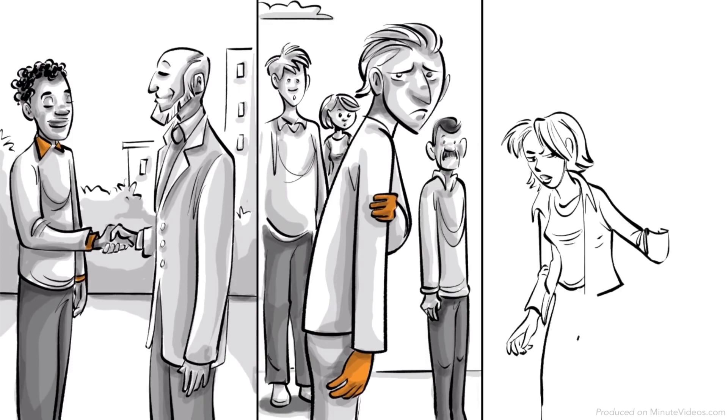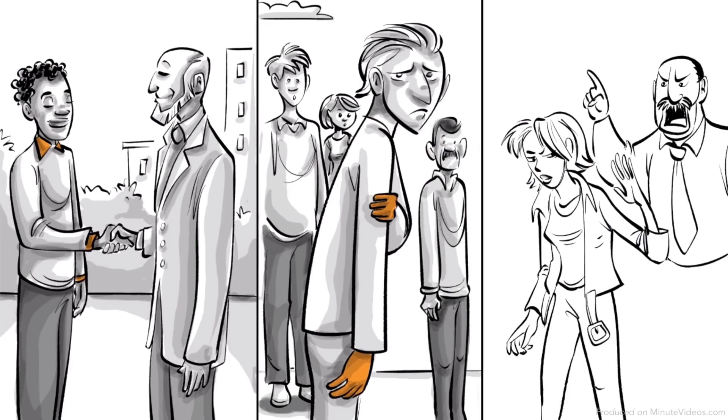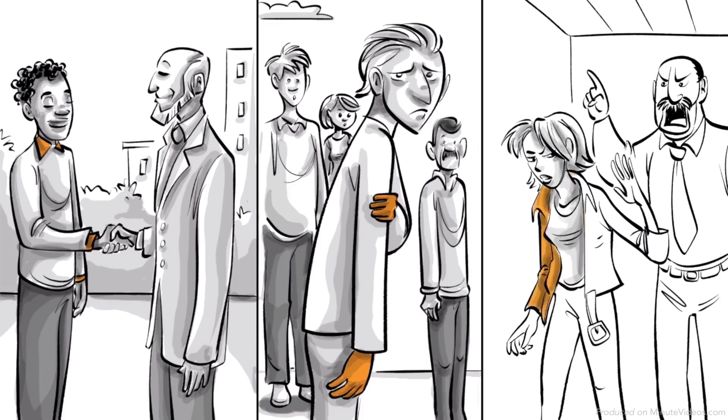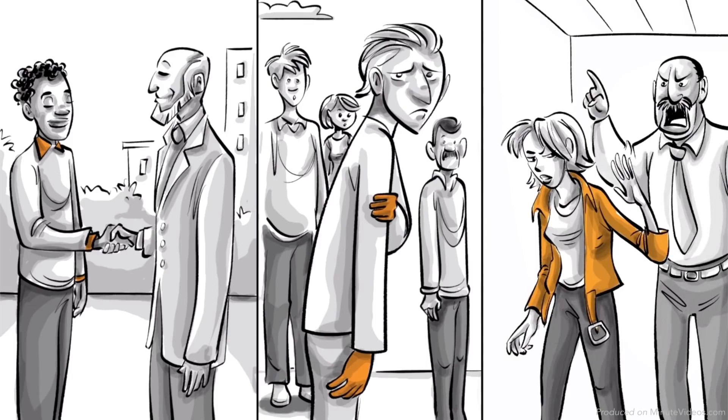Ida develops an anal expulsive personality. She becomes messy, disorganized, inconsiderate of other people's feelings and rebellious against authority.